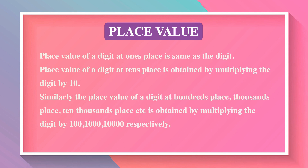Place value: the place value of a digit at the ones place is the same as the digit itself. The place value of a digit at the tens place is obtained by multiplying the digit by 10. Similarly, the place value of a digit at the hundreds, thousands, ten-thousands place, etc., is obtained by multiplying the digit by 100, 1000, 10,000 respectively.